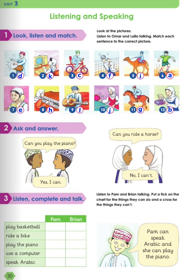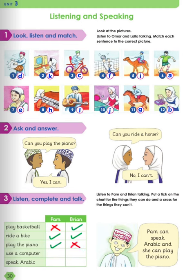Number three: listen, complete, and talk. This time we're going to listen to Pam and Brian talking. Put a tick on the chart for the things they can do and a cross for the things they can't do. Brian, can I ask you some questions for a survey? Of course, yes, okay. Can you play basketball? Yes, I can. Can you? Me? No, I can't. But I can ride a bike. Can you? Yes, I can. Can you play the piano? No, I can't. Can you? Yes, I can. I love playing the piano, and I love using the computer. Can you use a computer? Yes, I can. Last question — can you speak Arabic? No, I can't. Can you? Yes, I can. I'm learning it with my friend Maha.